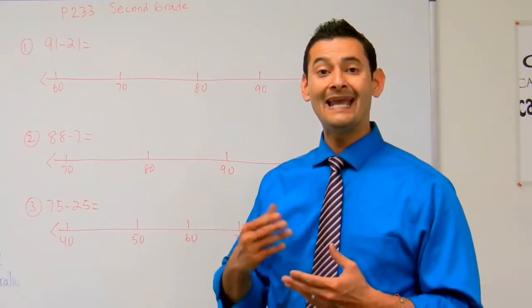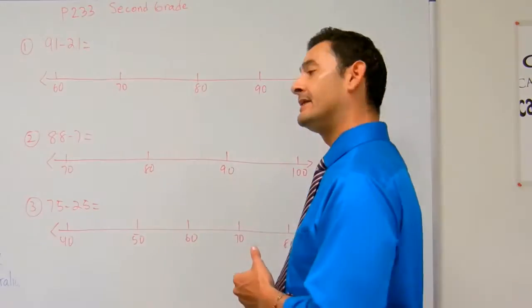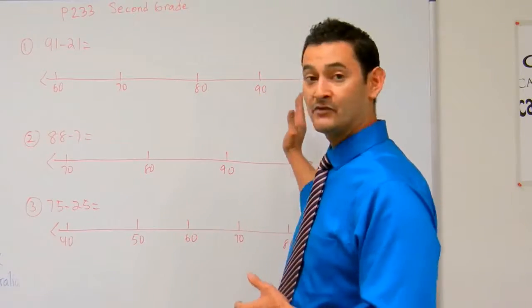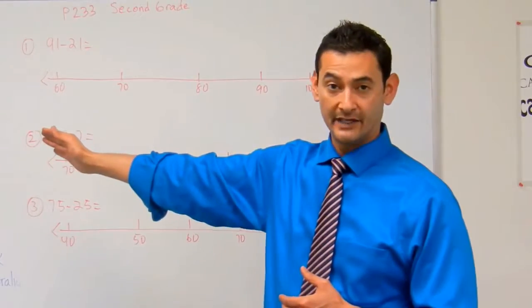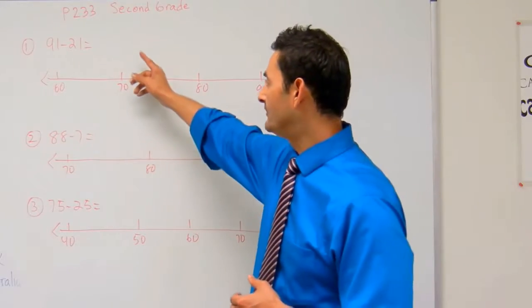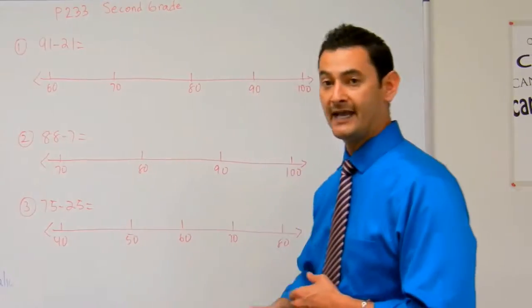Last time we added and went up on the number line. Now we're going to subtract and go back on the number line. We're going to work on numbers 1, 2, and 3 together.